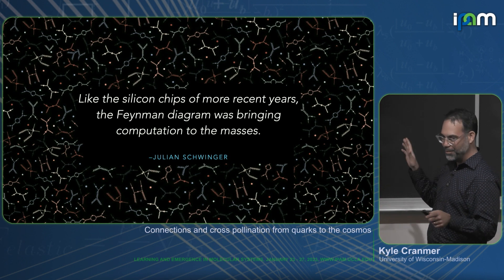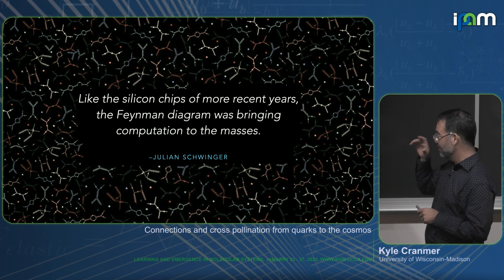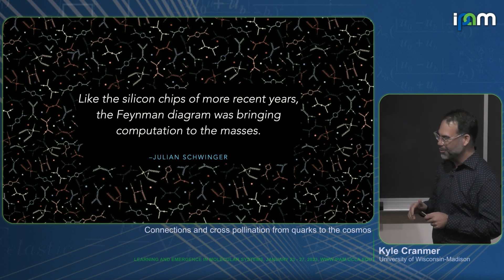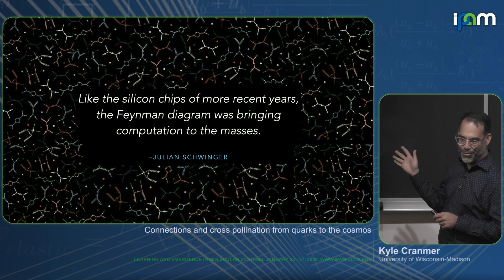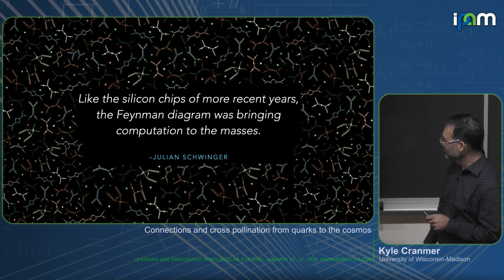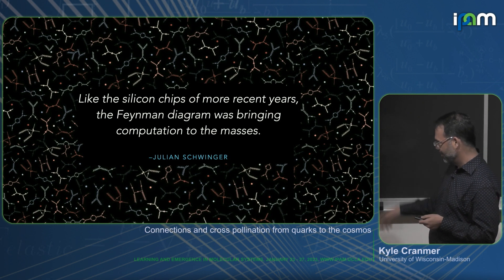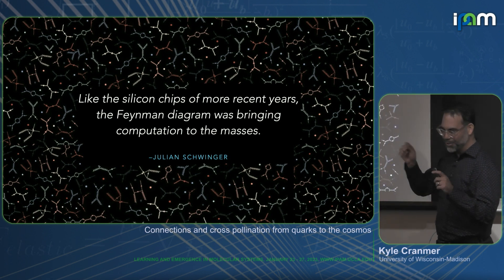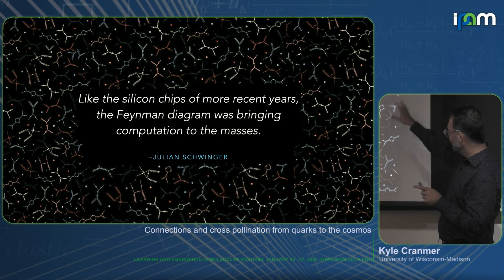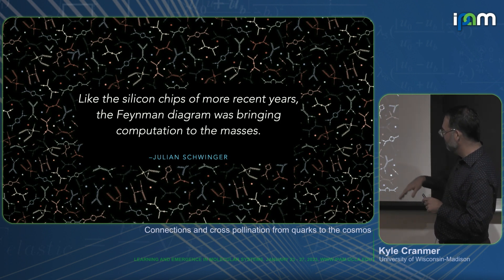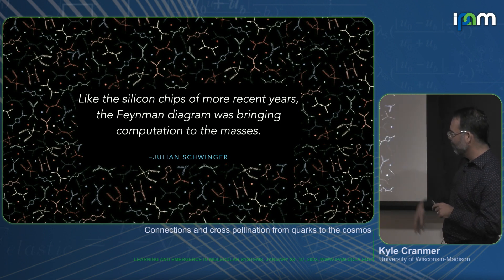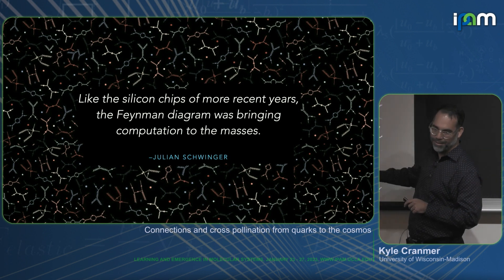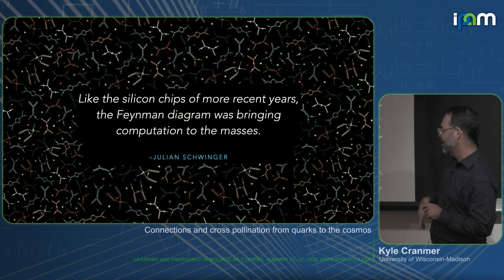I'm going to talk about both sides of that picture a little bit. Since this is being sponsored by the Julian Schwinger Institute, here's a great quote from Julian Schwinger, who was one of the advisors — actually a contemporary — of Feynman. They had a very different style. Schwinger was very formal; Feynman had a more pictorial way of doing things. Feynman's way of organizing the calculations made it much easier for people to calculate.